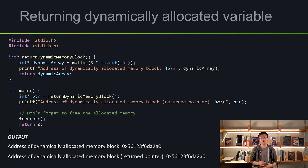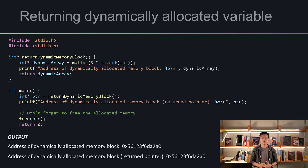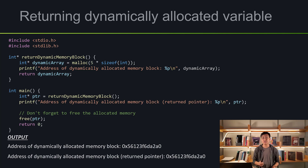Let's look at the third example, which is about returning dynamically allocated variables. I made a helper function that allocates memory, prints out the address of the allocated memory, and then returns it back to main. In main, I call the helper function and set it equal to an int pointer. After that, I print out the address. We cannot forget — we have to free the allocated memory. As you can see in the output, the two addresses are exactly the same. This is the power of dynamically allocated memory: we continuously have access to it even after we leave the block.